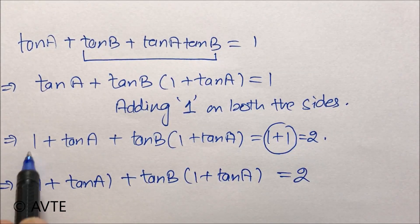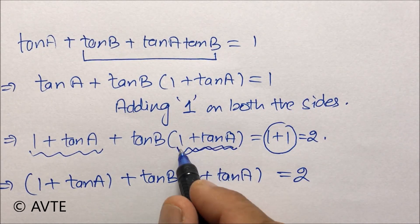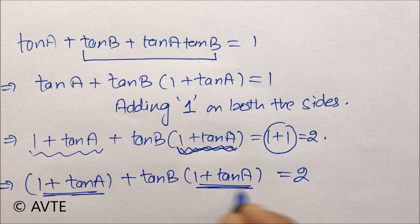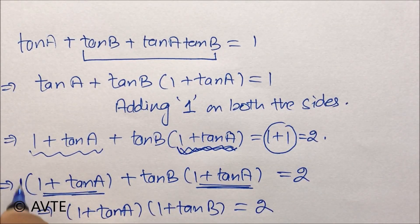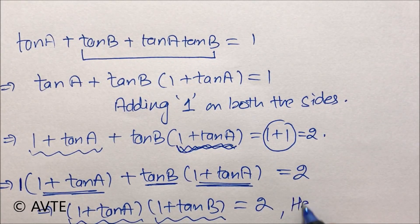We have grouped 1 + tan A, and we already have 1 + tan A as a term here. So we can now take (1 + tan A) common, and since we have 1 and tan B as their coefficients, we get (1 + tan A)(1 + tan B) = 2. Hence proved.